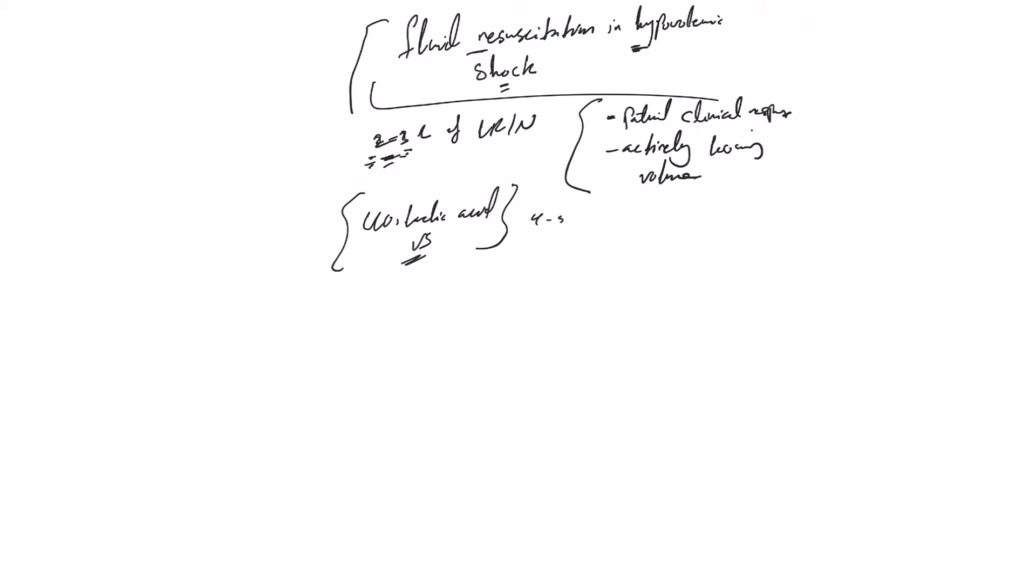This is very important - we have to control the source. Severe diarrhea, try to stop that diarrhea. Severe vomiting, stop that vomiting. Severe GI bleed, we have to stop the bleeding.